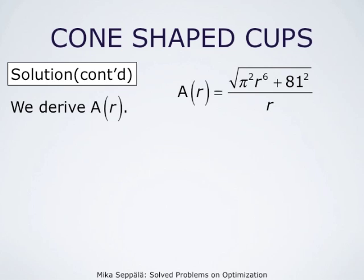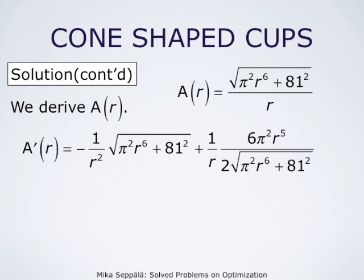We differentiate using the product rule rather than the quotient rule, for notational convenience and brevity. The derivative of 1 divided by r is minus 1 divided by r squared, multiplied by the other factor, which is square root of pi squared r to the sixth plus 81 squared. Then we have plus 1 over r times the derivative of square root of pi squared r to the sixth plus 81 squared, computed using the power and chain rules, which gives 6 times pi squared r to the fifth divided by 2 times square root of pi squared r to the sixth plus 81 squared.